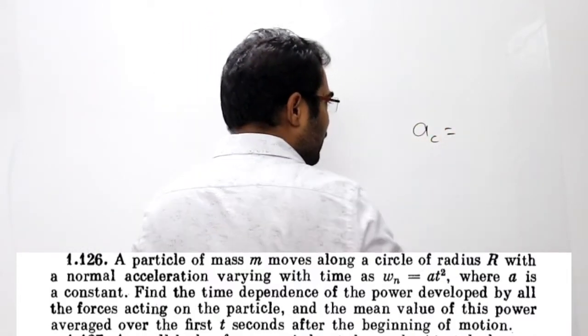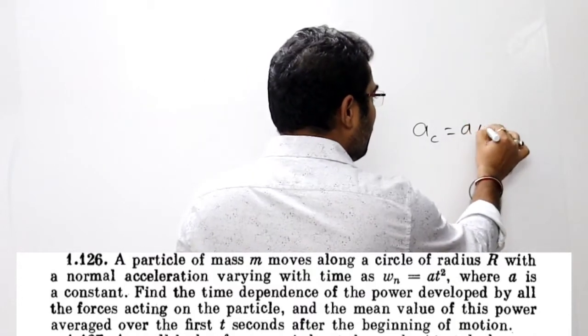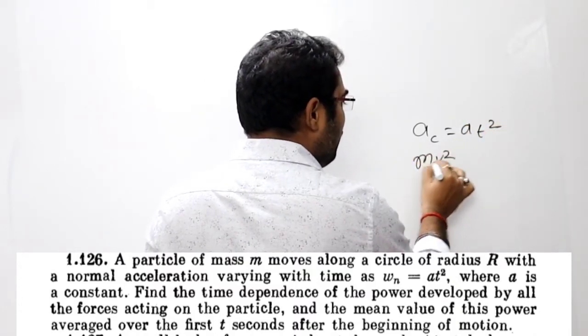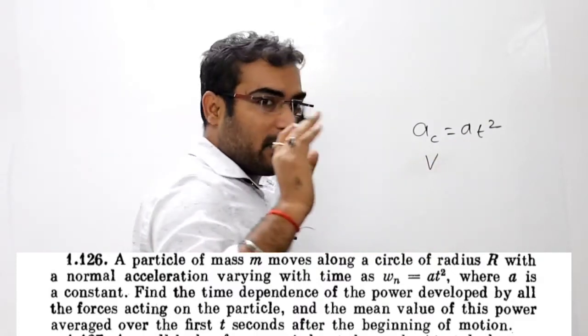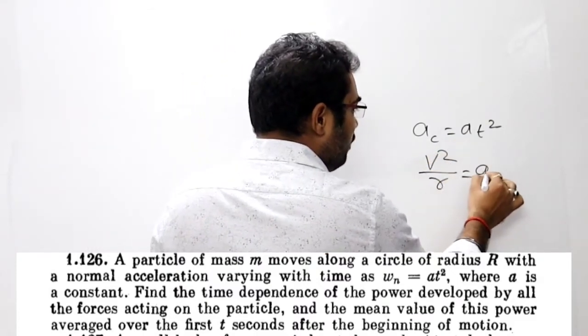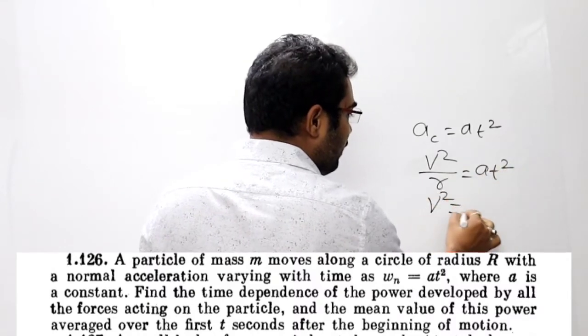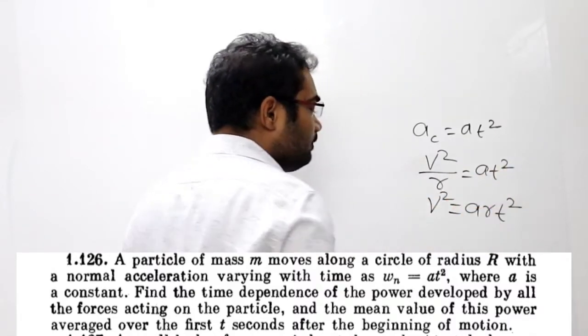Toh centripetal acceleration ka equation kya diya hua hai - A T squared diya hua hai na. Toh isko kya likhenge: V squared by R. Centripetal acceleration, centripetal force nahi hai. Toh V squared by R, and that is equal to A T squared. Toh V squared ka equation: alpha R into t squared. Thik hai.